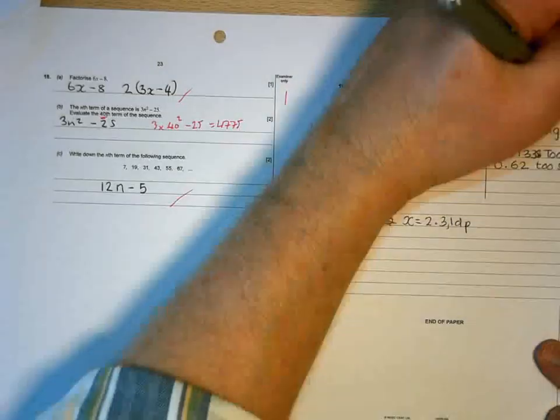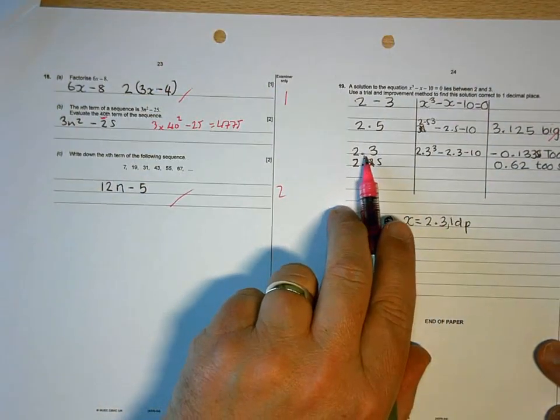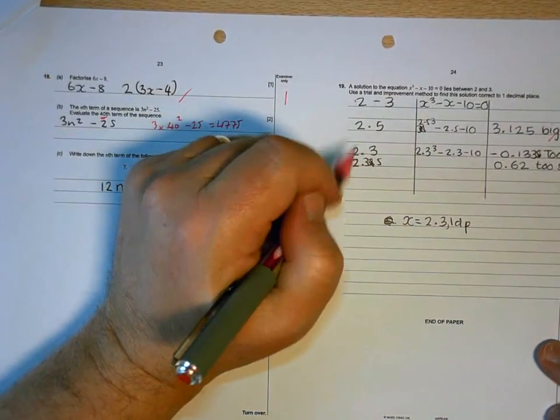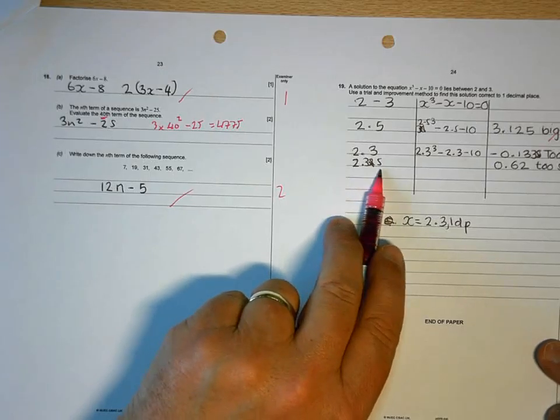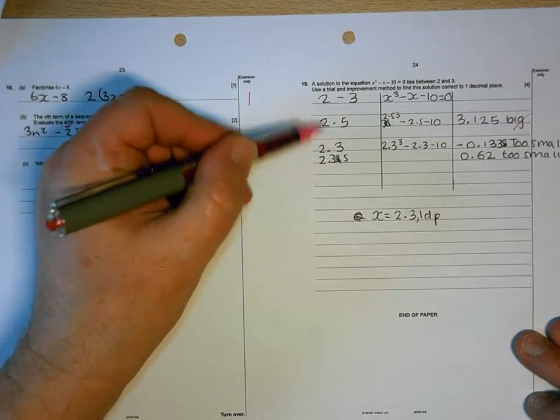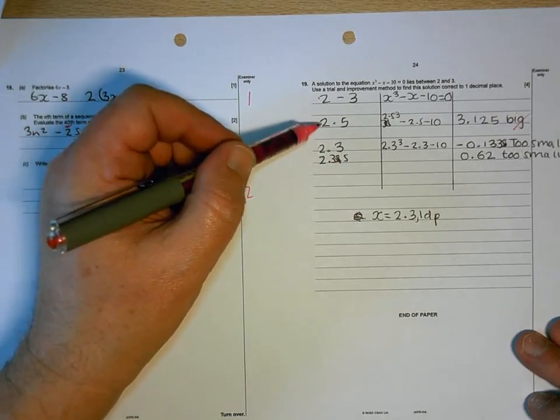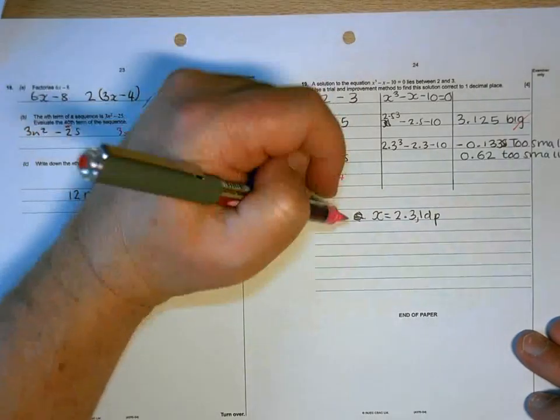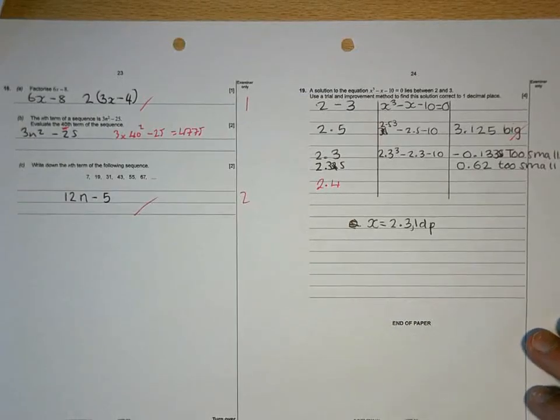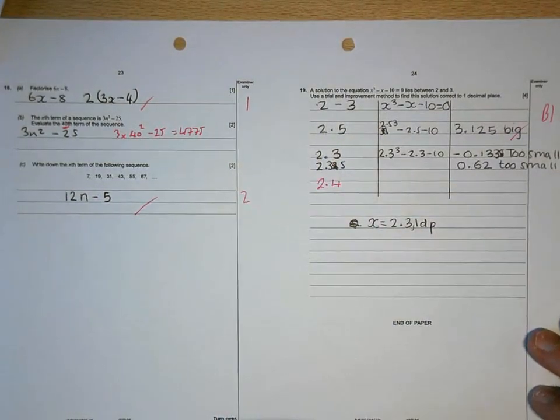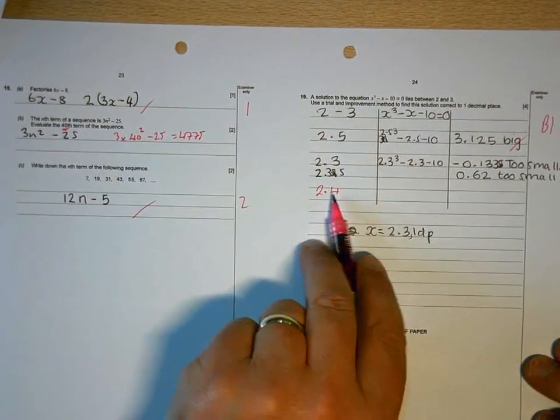And then finally, 2.5 is too big. 2.3 is too small. Now, you haven't got it. You've gone to one decimal place without getting them consecutive. Okay. There's another one decimal place number between 2.3 and 2.5. So you need to do 2.4 next before you go halfway between. So you are only going to get one mark for that because you haven't got it down to consecutive numbers yet.